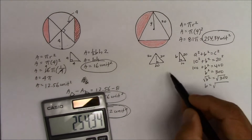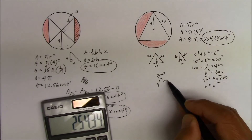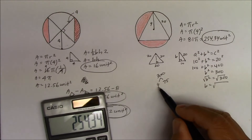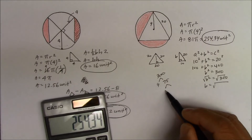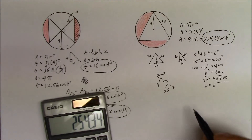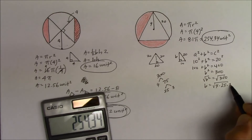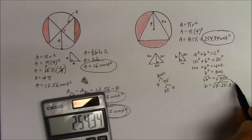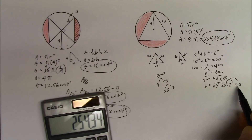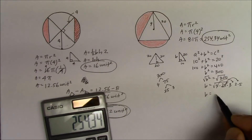We need to simplify the square root of 300 using prime factorization. Does 4 go in? 4 times 75 — and 75 equals 25 times 3. So square root of 300 is like square root of 4 times 25 times 3. Square root of 4 gives 2, square root of 25 gives 5, and they multiply together. The 3 is stuck — it's not a perfect square, it's prime. So B equals 10 square root of 3.